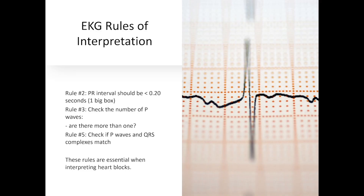If we remember from our Rules of Interpretation video, rule number two talks about the PR interval being less than 0.2 seconds or one big box. Rule number three talks about how many P waves are present — are there more than one? And rule number five discusses whether the P waves and the QRS complexes match each other. These three rules are going to be essential when interpreting heart blocks.